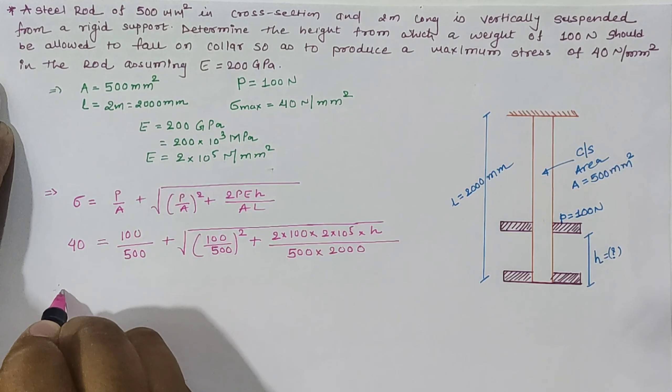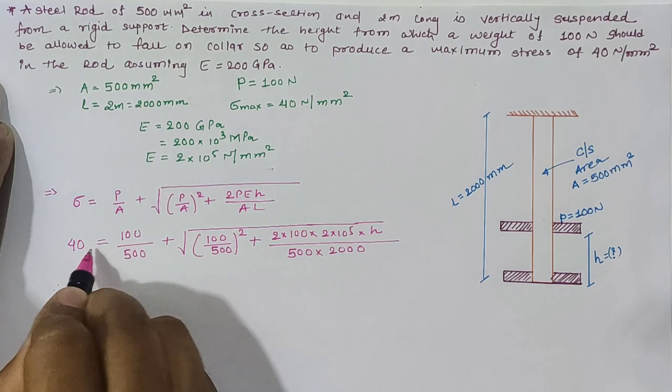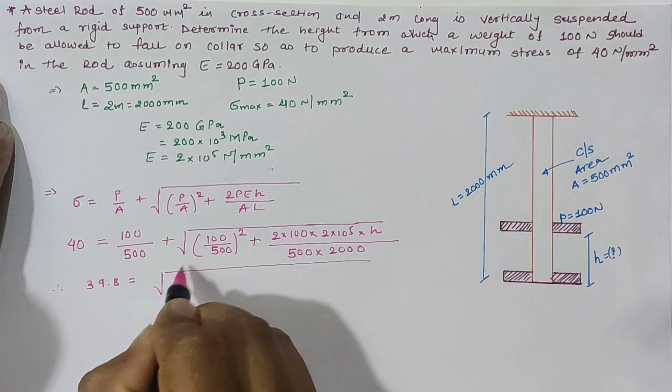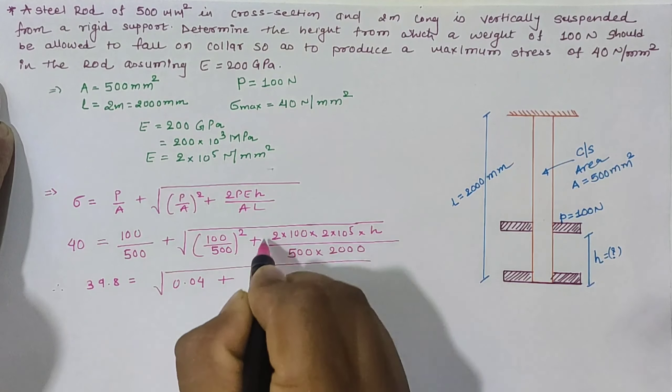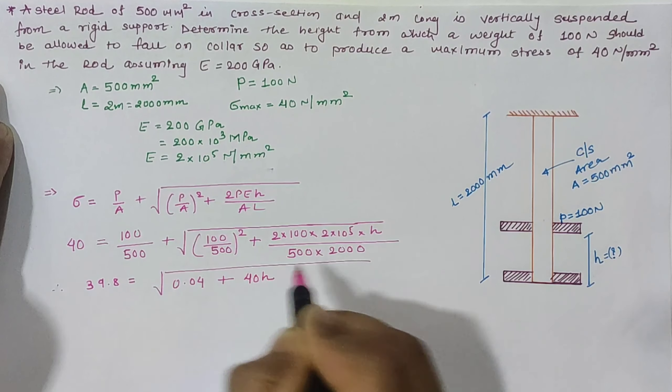Now solving this term: 40 - 100/500 = 39.8, which equals the square root of (100/500)² = 0.04 plus the term that gives us 40H.